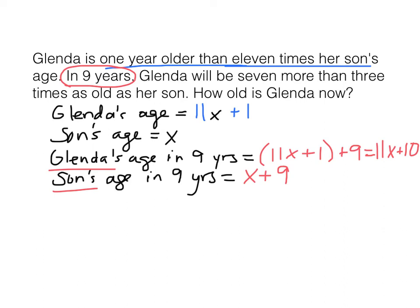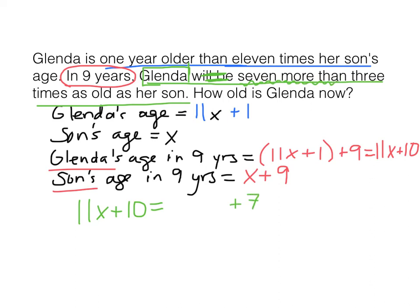Now we write our equation using the in-nine-years ages. Glenda's age in nine years is 11X plus 10. She will be seven more than three times as old as her son. The son's age in nine years is X plus 9, so three times that is 3(X plus 9), and seven more gives us 3(X plus 9) plus 7. So our equation is: 11X plus 10 equals 3(X plus 9) plus 7.